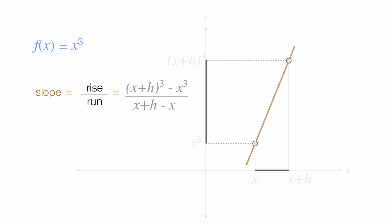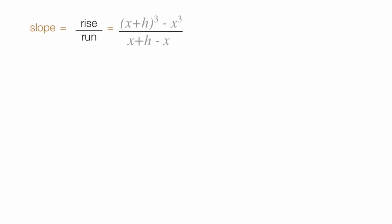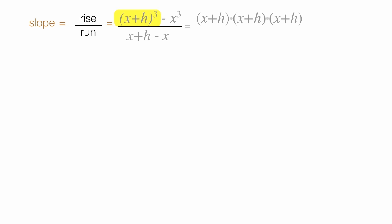So, let me move this up a little bit, give myself some space. x plus h cubed, I can write as x plus h times x plus h times x plus h. And then I'll subtract x cubed, divided by, those two x's cancel out, just h.